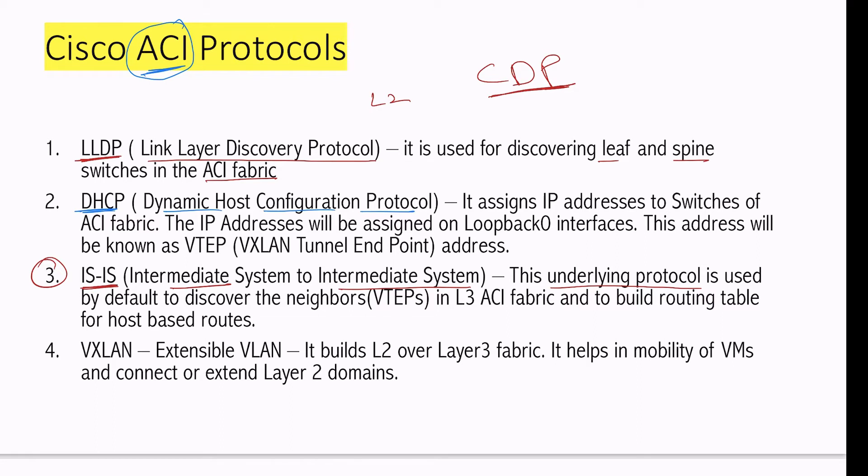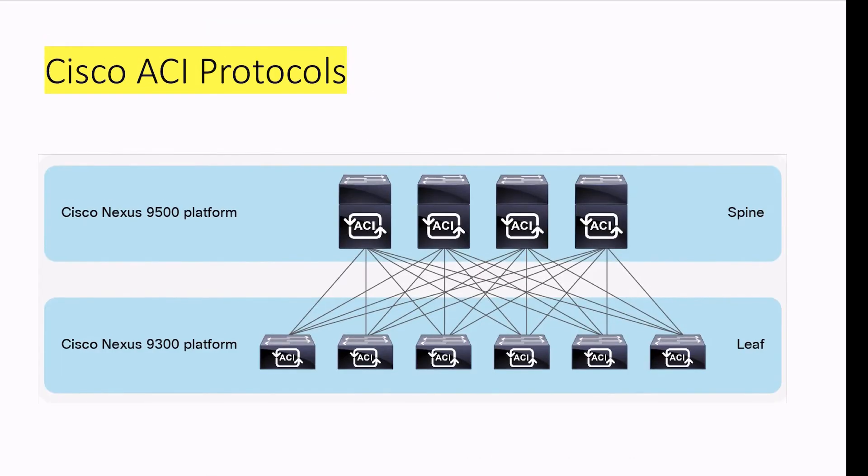It is by default enabled. It's basically used for discovering the spine and leaves, which are here known as VTEPs. The IPs which were assigned by APIC with the help of DHCP will be known as VTEP addresses. Build routing table and host-based routes. Host-based means this IP will be considered as a host-based network. Let's say the IP of this is .106, and it will be represented as 106 slash 32. So this is a network. The routing table has to be built, for that we use IS-IS. It's an underlying protocol; we don't have to worry about enabling it. It's by default running.